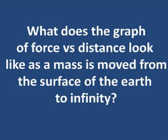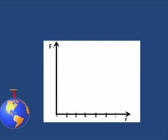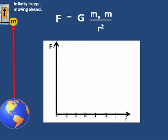Now, what does the graph look like, a force versus distance, when a mass is moved from the surface of the Earth to infinity? Well, if I lift a mass up to infinity, just keep that sucker going, that's the formula. That tells me the force varying with distance. So if I plot f versus r, this is the graph that I get.